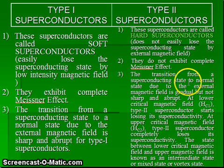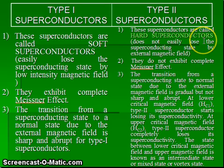The transition from a superconducting state to a normal state due to an external magnetic field in type 2 superconductors is gradual and not sharp and abrupt. At the lower critical field, HC1,